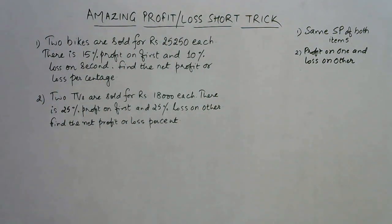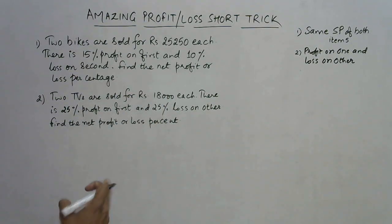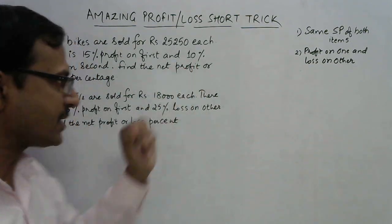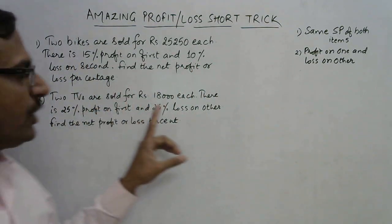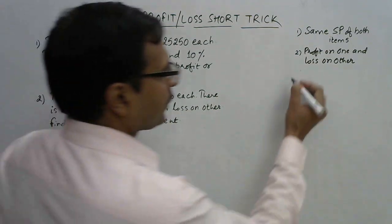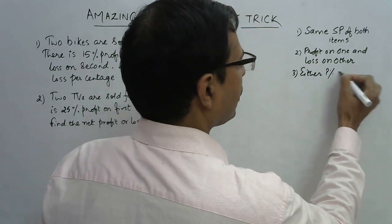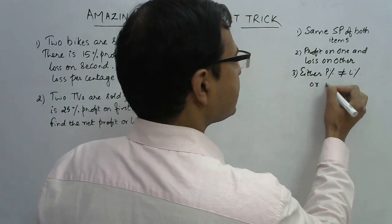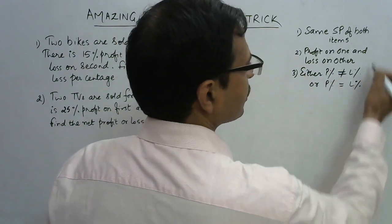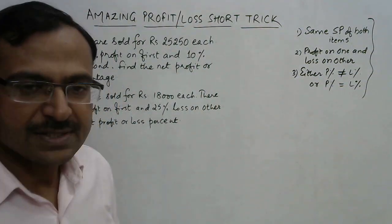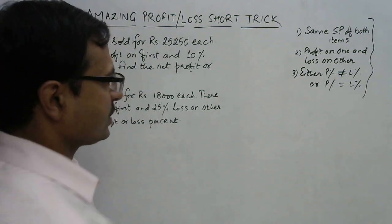The required answer is the same for both — find the net profit or loss percent. What is different between the two questions is that in the first we have 15% profit and 10% loss, whereas in the second we have 25% profit and 25% loss. So either the profit percent is not equal to the loss percent, or it is equal. These are the three things we need to observe.